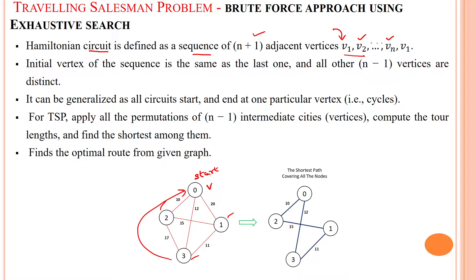So here he is starting from the v1, then he may visit v2, v3, and here v4. So finally again he is returning back to the v1. So that is the meaning of the first statement.